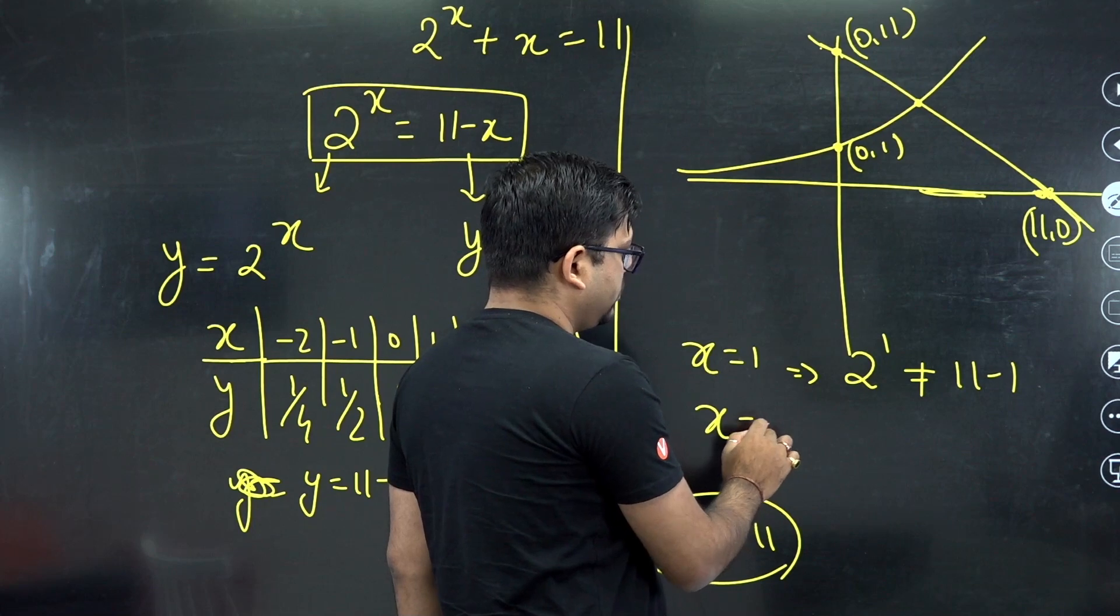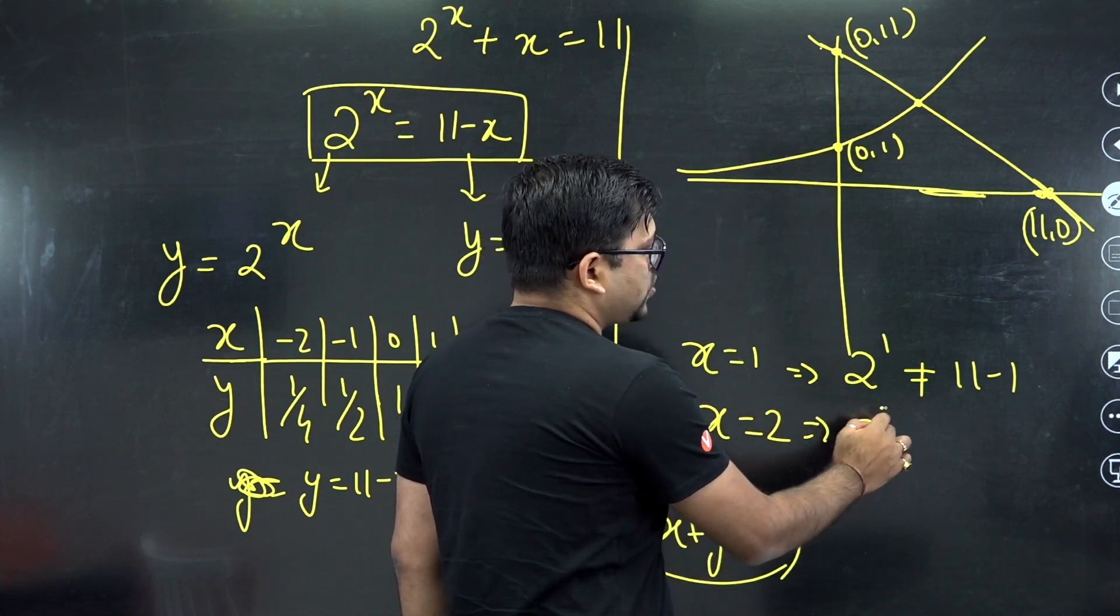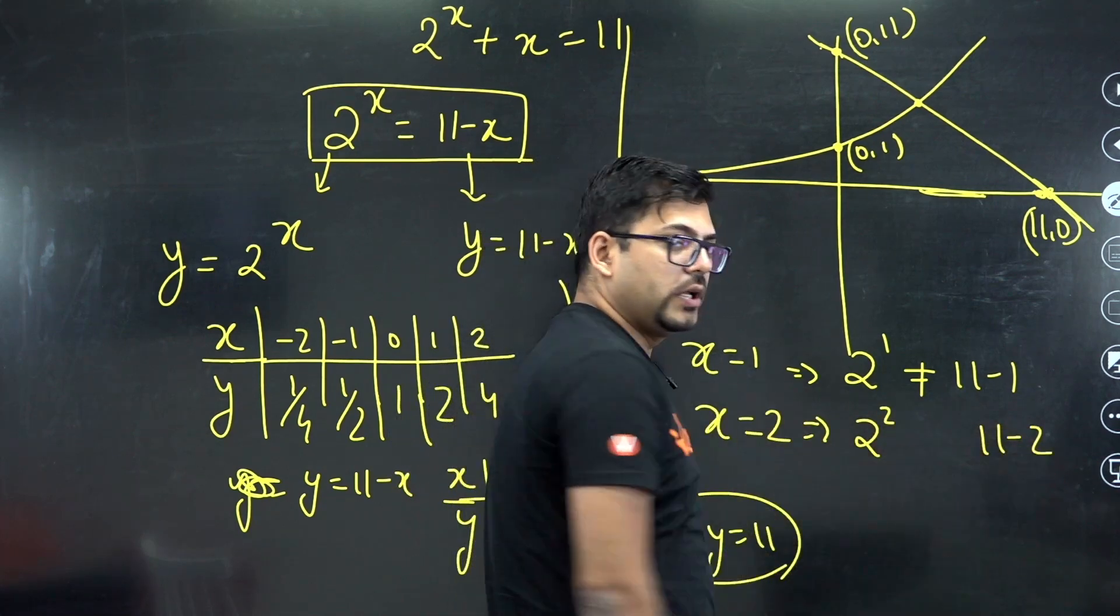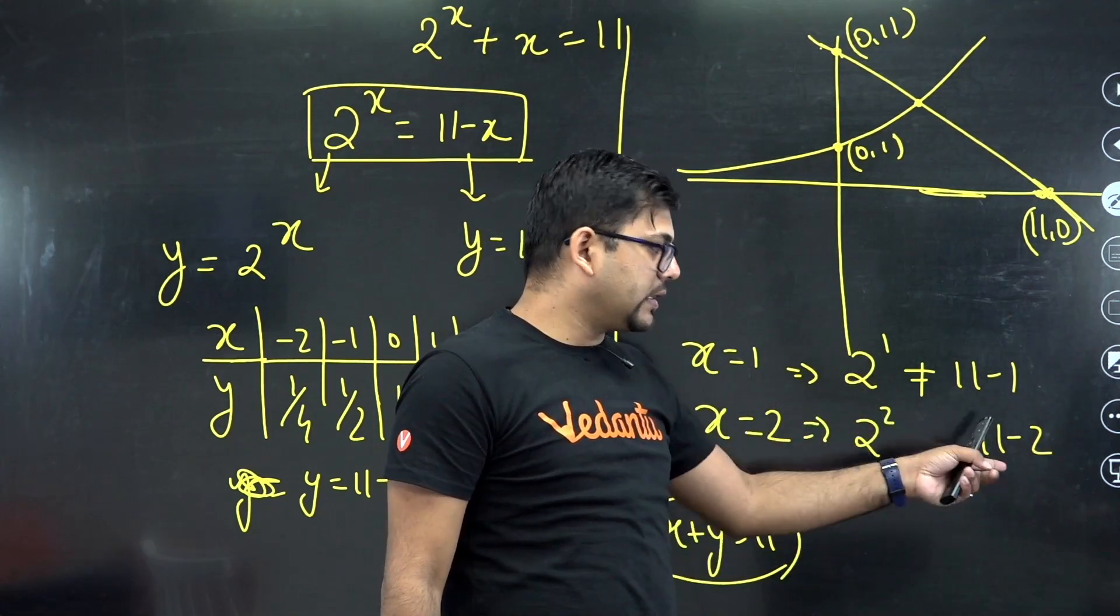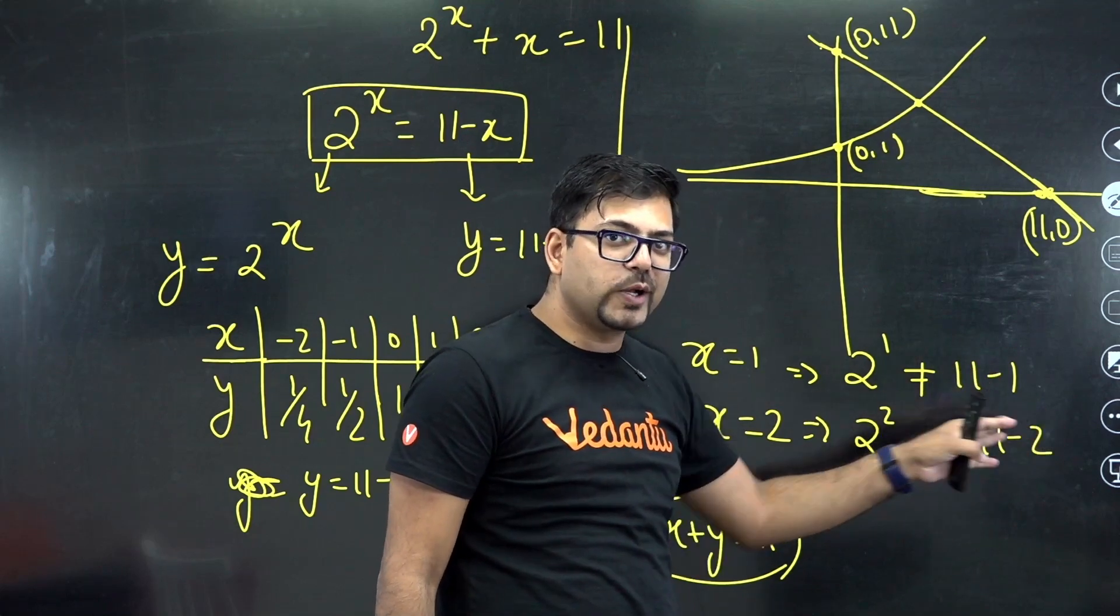At x equals 2, this becomes 2 raised to power 2 and this becomes 11 minus 2. 11 minus 2 is 9, and 2 raised to power 2 is 4. So this is increasing and this is decreasing, so they are coming closer.